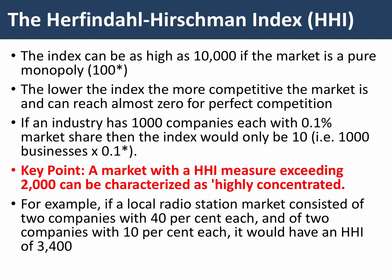Remember what I said about the concentration ratio: a C5 ratio of more than 60% suggests a concentrated oligopoly. With the HHI — the Herfindahl-Hirschman Index — a market with a number in excess of 2,000 can be taken as a rule of thumb as a highly concentrated market. For example, a local market for radio stations with two companies at 40% each and two companies at 10% each gives you an HHI of 3,400 — well above the 2,000 benchmark.